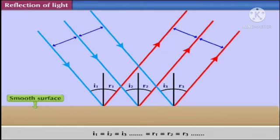So for regular surfaces, I1 is equal to I2 is equal to I3 and so on, and is equal to R1 is equal to R2 is equal to R3 and so on.